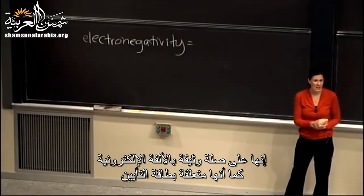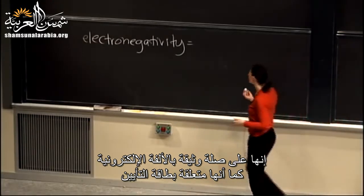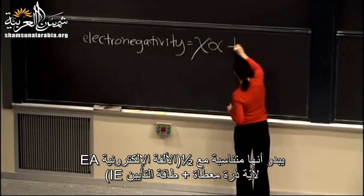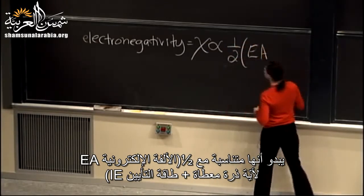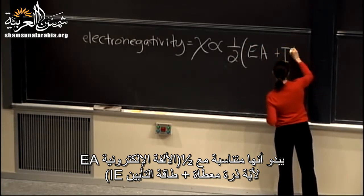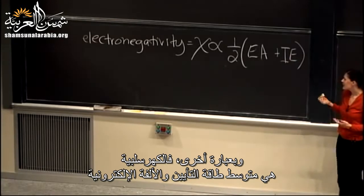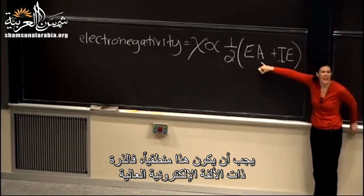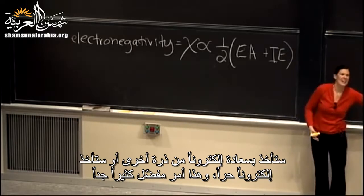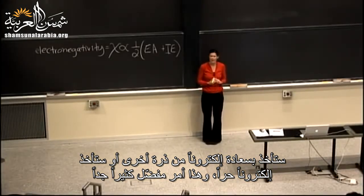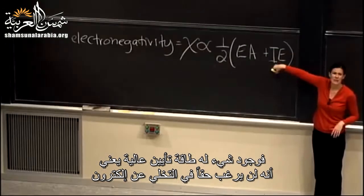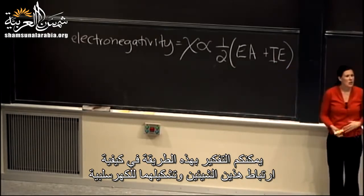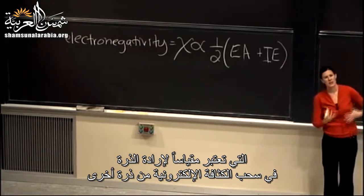Electronegativity is proportional to one-half of the sum of the electron affinity plus the ionization energy of a given atom — in other words, the average of those two quantities. This makes sense: high electron affinity means the atom really wants to take an electron; high ionization energy means it really doesn't want to give one up. Together, these define how much the atom pulls electron density from another.